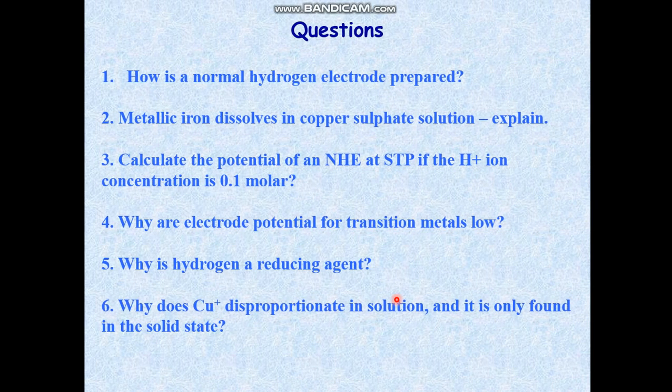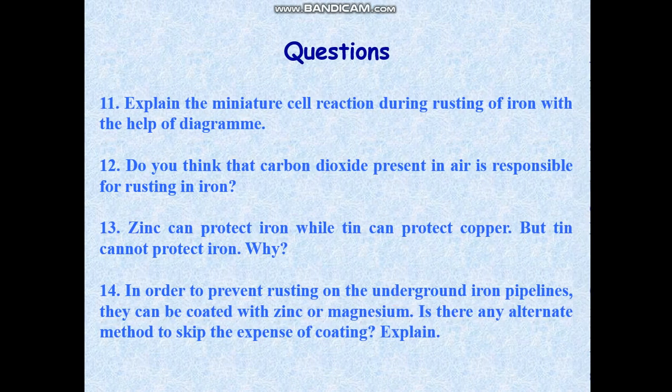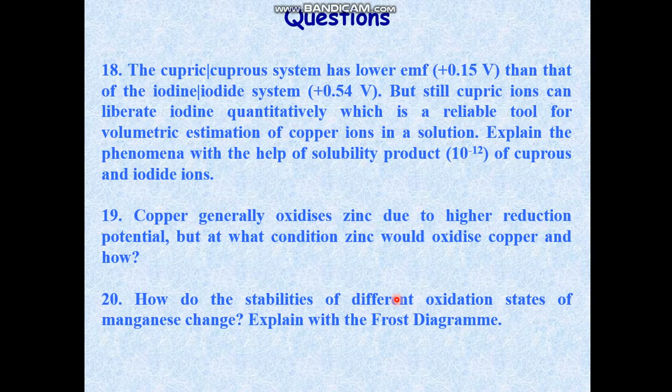Now the questions here: How is normal hydrogen electrode prepared? Metallic iron dissolves in copper sulfate solution, explain. Calculate the potential of a normal hydrogen electrode at standard temperature and pressure if the H⁺ ion concentration is 0.1 molar. Next question: Why are electrode potentials for transition metals very low? Then why is hydrogen a reducing agent? All these answers are provided in your notes. So this way we have a set of 20 questions here. You have to answer all of them. If you have any query, then ask me. Thank you.